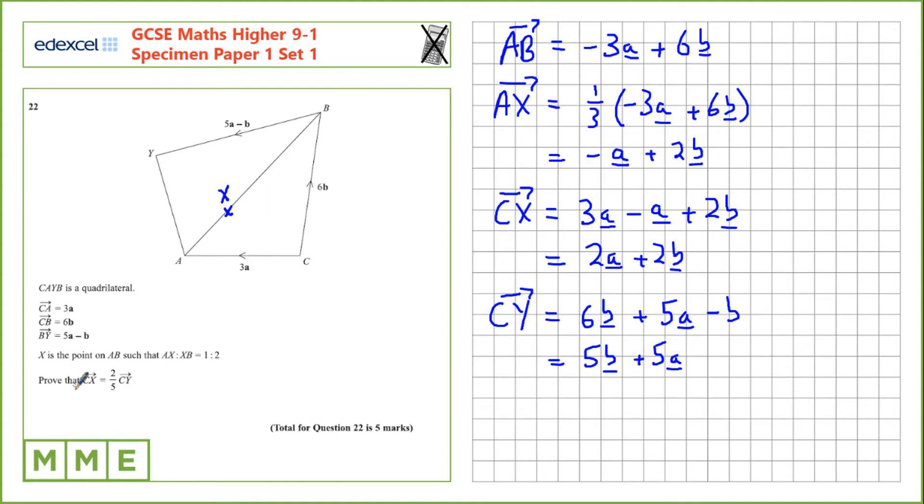Now we've got to look at the relationship between these two. So we have 2a plus 2b and we have 5a plus 5b. If we divide this by 5, we'll be left with a plus b. All we need to do to get from a plus b to 2a plus 2b is to multiply by 2, and then we have our relationship. This is CX, and that's equal to two-fifths of CY, as we were expected to find out.